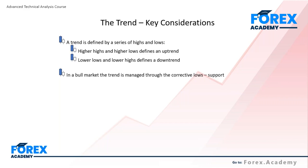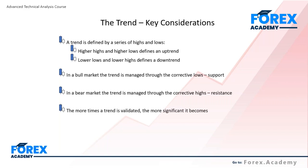In a bull market, the trend is managed through its corrective lows. This provides us with an ability to identify support levels. So in a bull market, support levels are the more important of the two types of levels — support and resistance. In a downtrend or bear market, the trend is managed through the corrective highs, and we are then able to identify and establish where our important resistance levels lie.